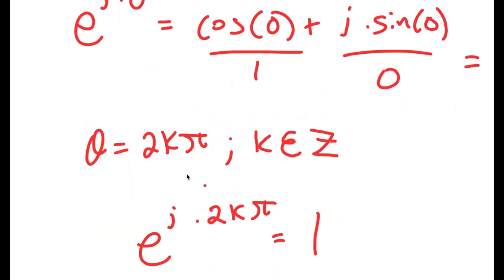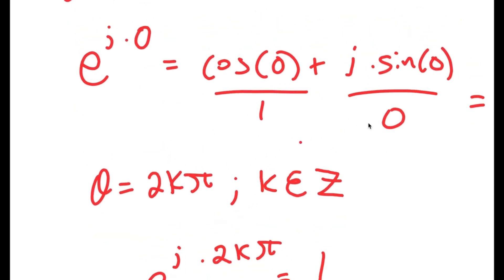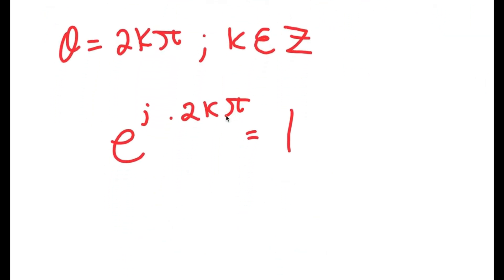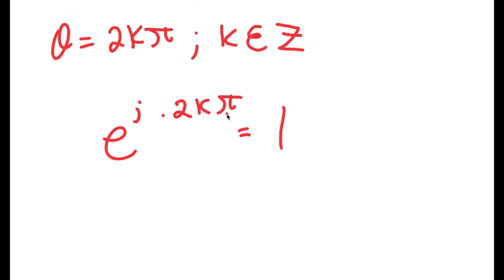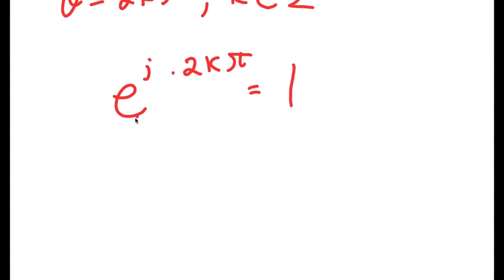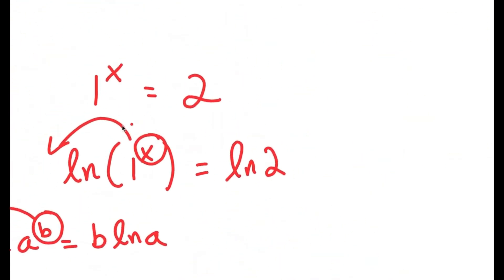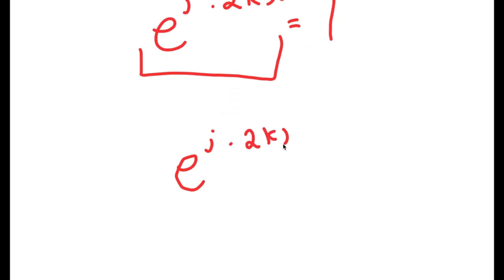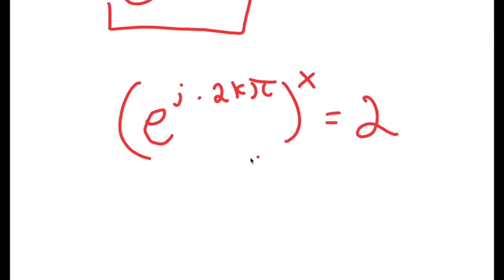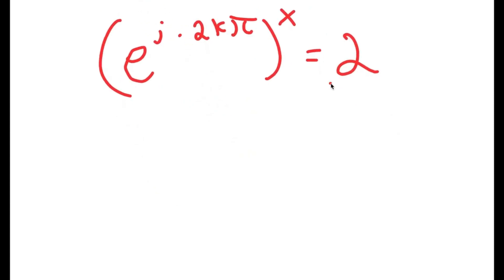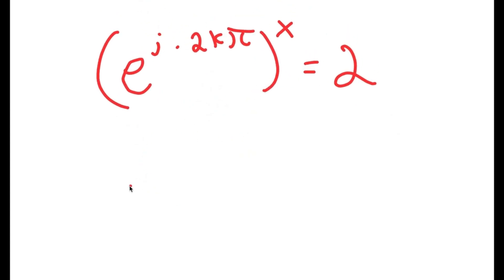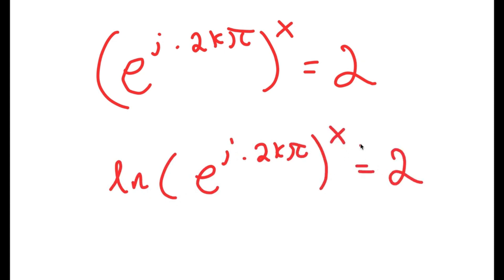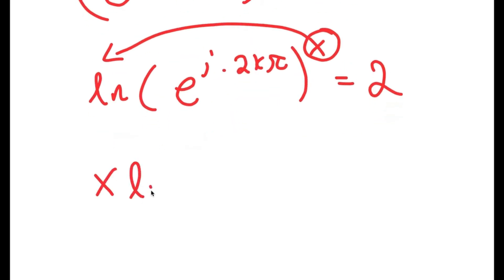Because all we did was substitute theta for 2k·pi into this same expression. Now, because e^(i·2k·pi) is equal to 1, and we started with 1 to the power of x equals 2, we can substitute this in for 1. So I get e to the power of i times 2k·pi, to the power of x, is equal to 2. I'm going to take the ln on both sides. So I have ln of e to the power of i times 2k·pi to the power of x is equal to ln of 2. Now I'm going to bring x down using the property of natural logarithms, so I get x times ln(e^(i·2k·pi)) is equal to ln(2).